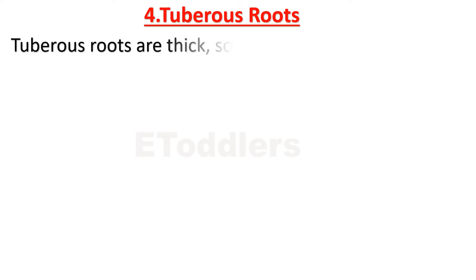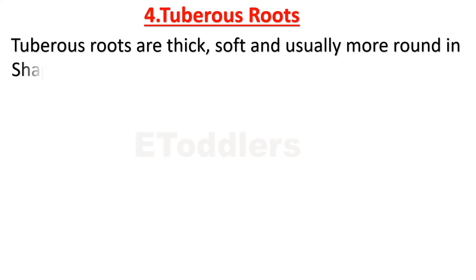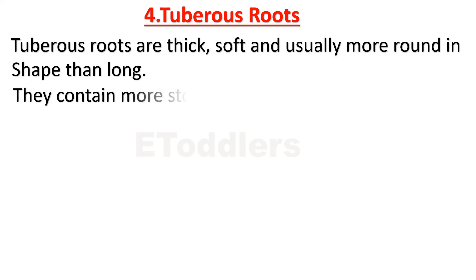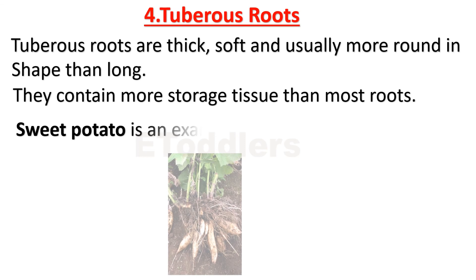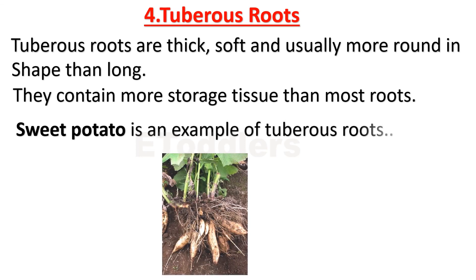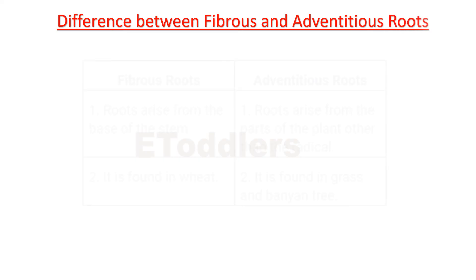Learn about tuberous roots. Tuberous roots are thick, soft, and usually more round in shape than long. They contain more storage tissue than most roots. Sweet potato is an example of tuberous roots.